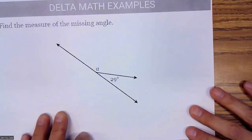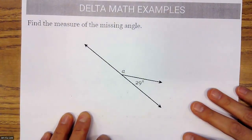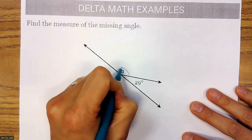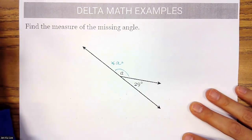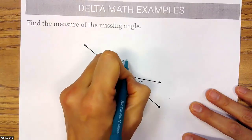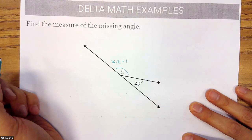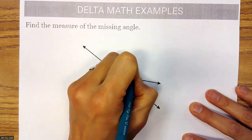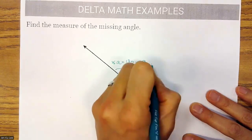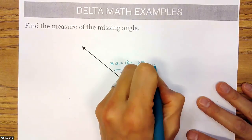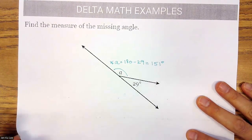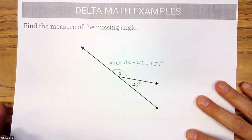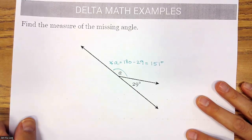What about this one? To find angle A, we do 180 minus 29, which is 151 degrees.